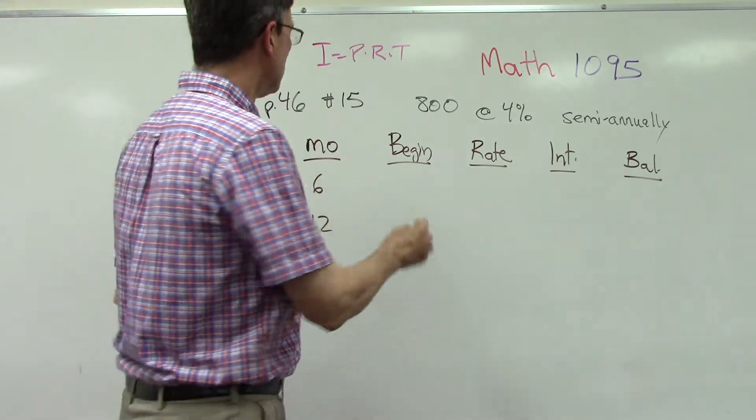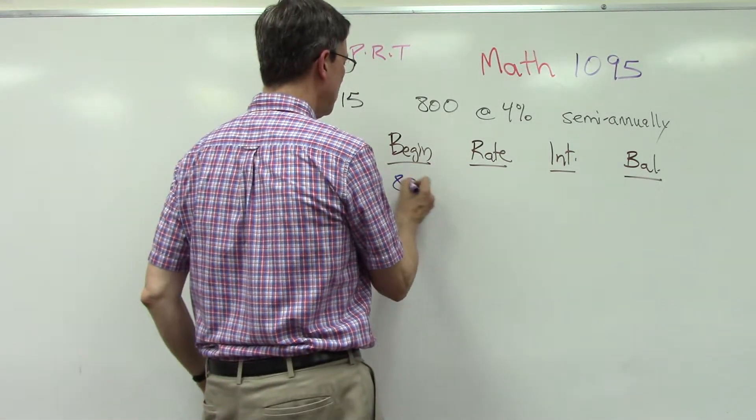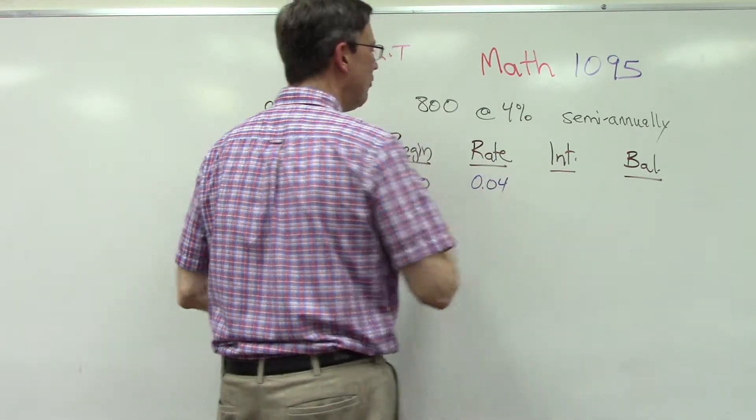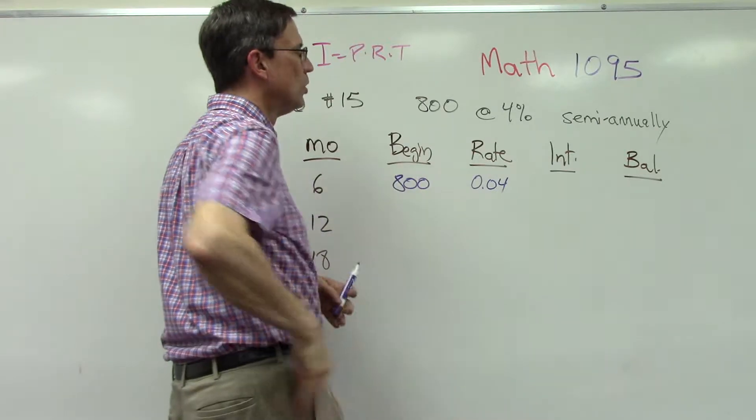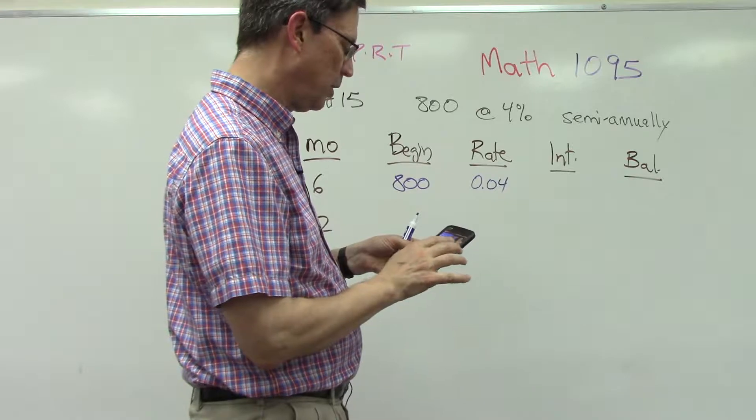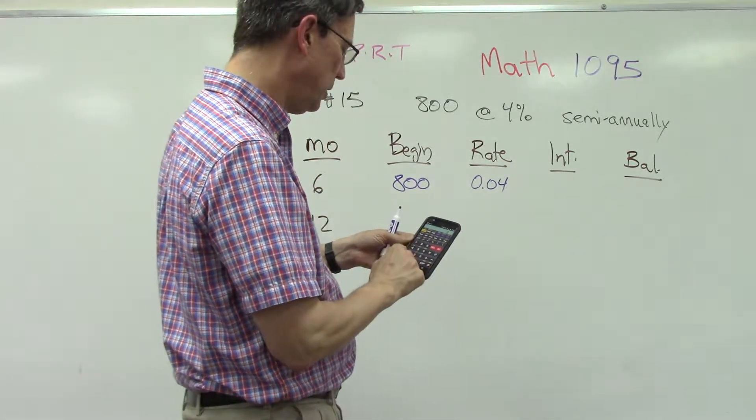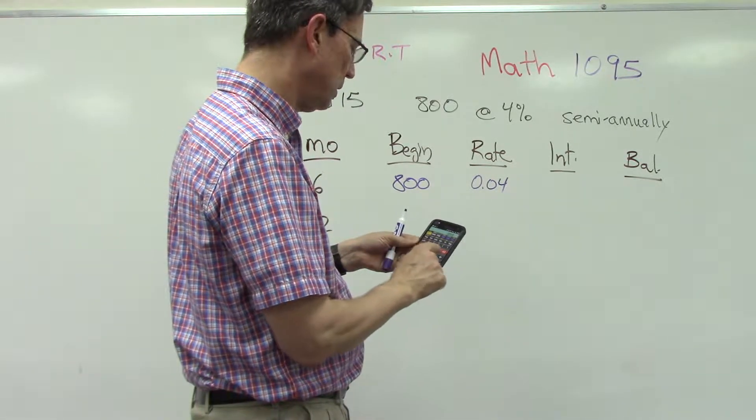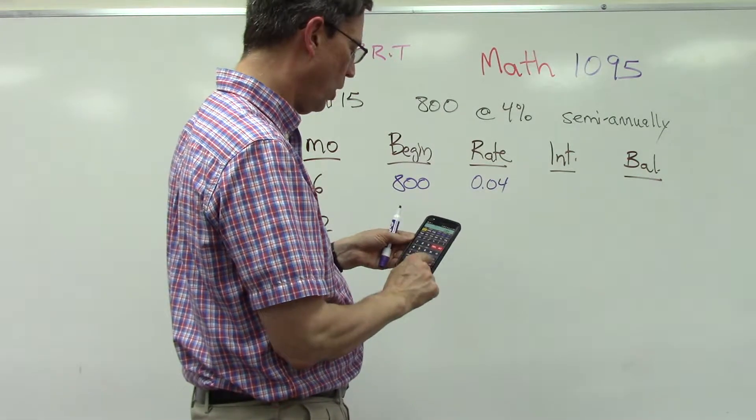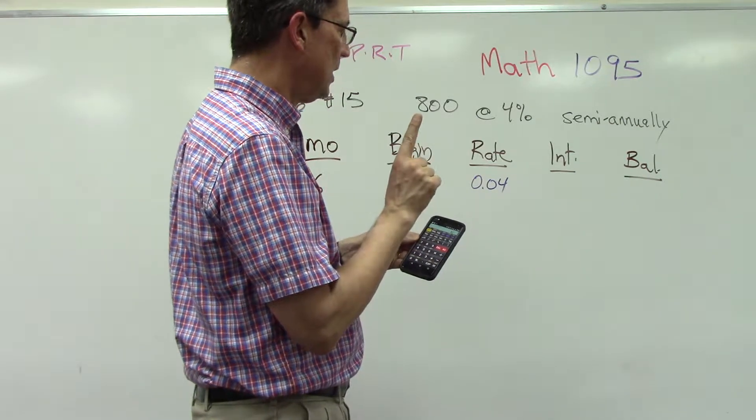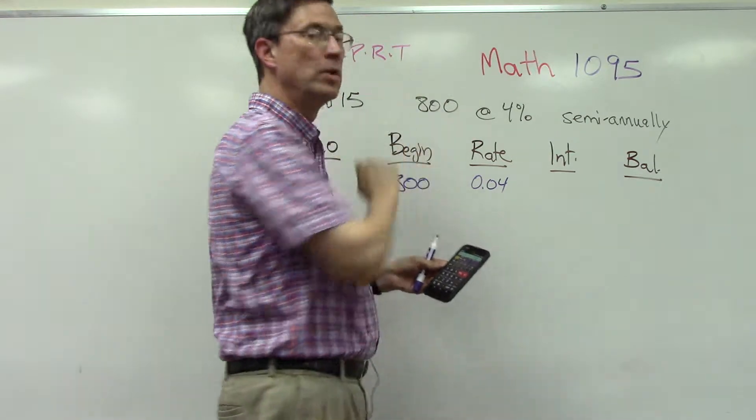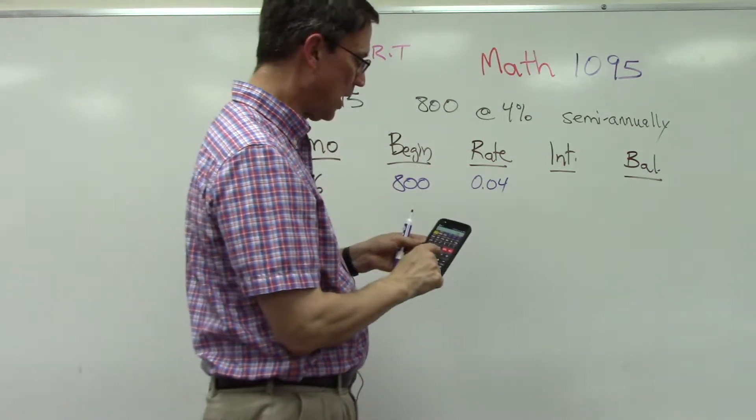So let's start with 800 here. The rate is 4%, so that's going to be 0.04. So let's figure out what the interest would be. I'm going to pull my calculator out here. 800 times 0.04 - now we're not done because that's 32 - but I now need to multiply that times the time which is 0.5. So times 0.5, half a year...